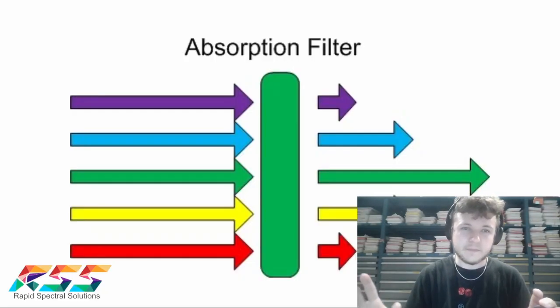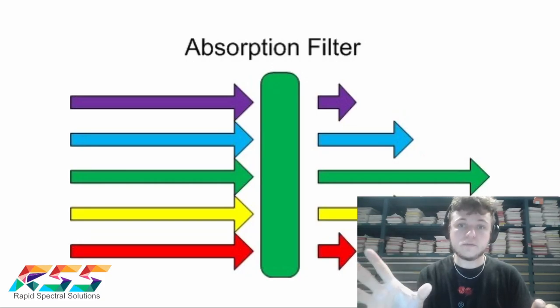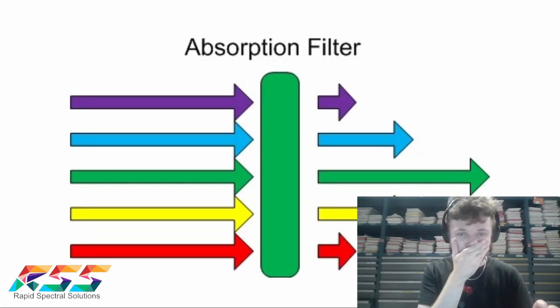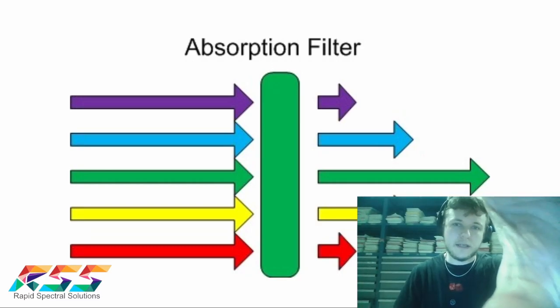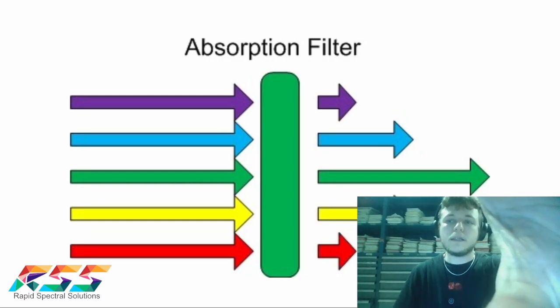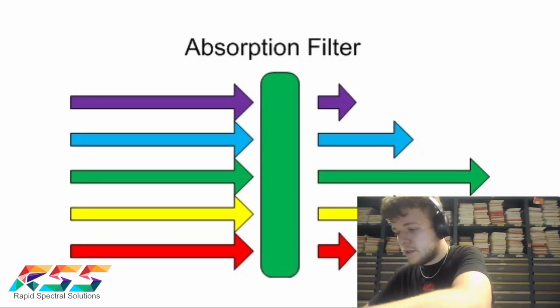An absorption filter is one of the two main kinds of optical filters. It works by absorbing the light it doesn't want to transmit. It takes energy from the other wavelengths, letting through primarily what it wants while reducing transmission of the other colors. That's why a red absorption filter gives everything a red tint. These are the cheapest options available — they can even just be dyed glass.